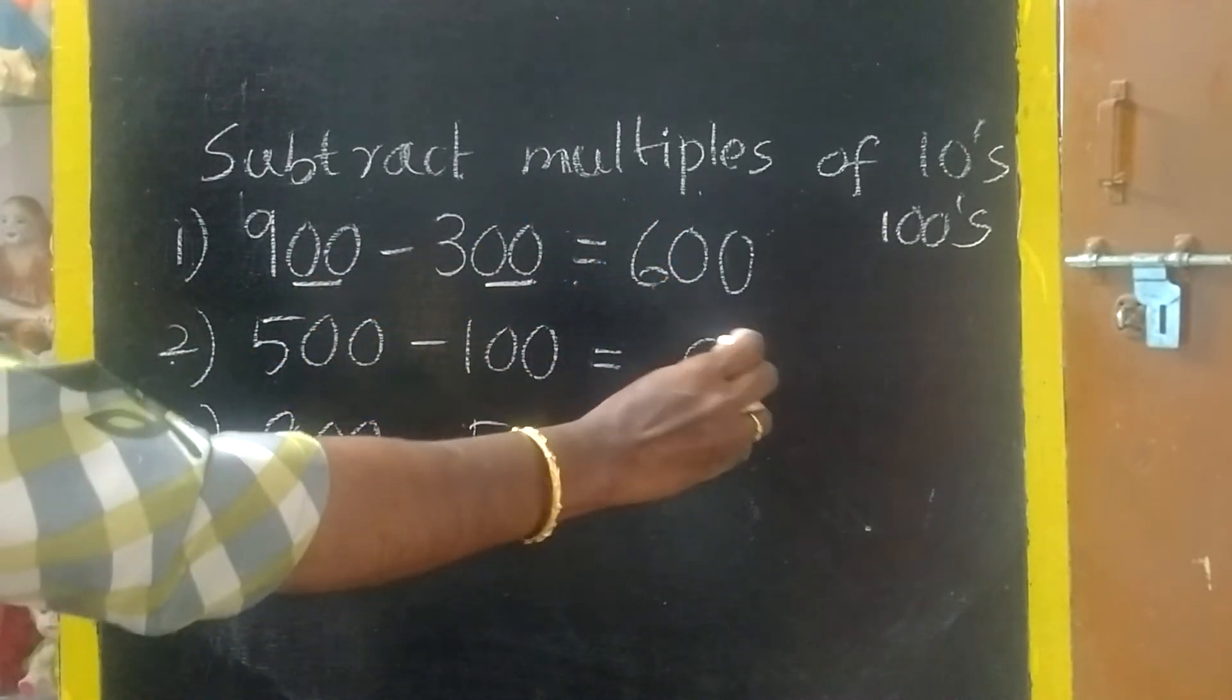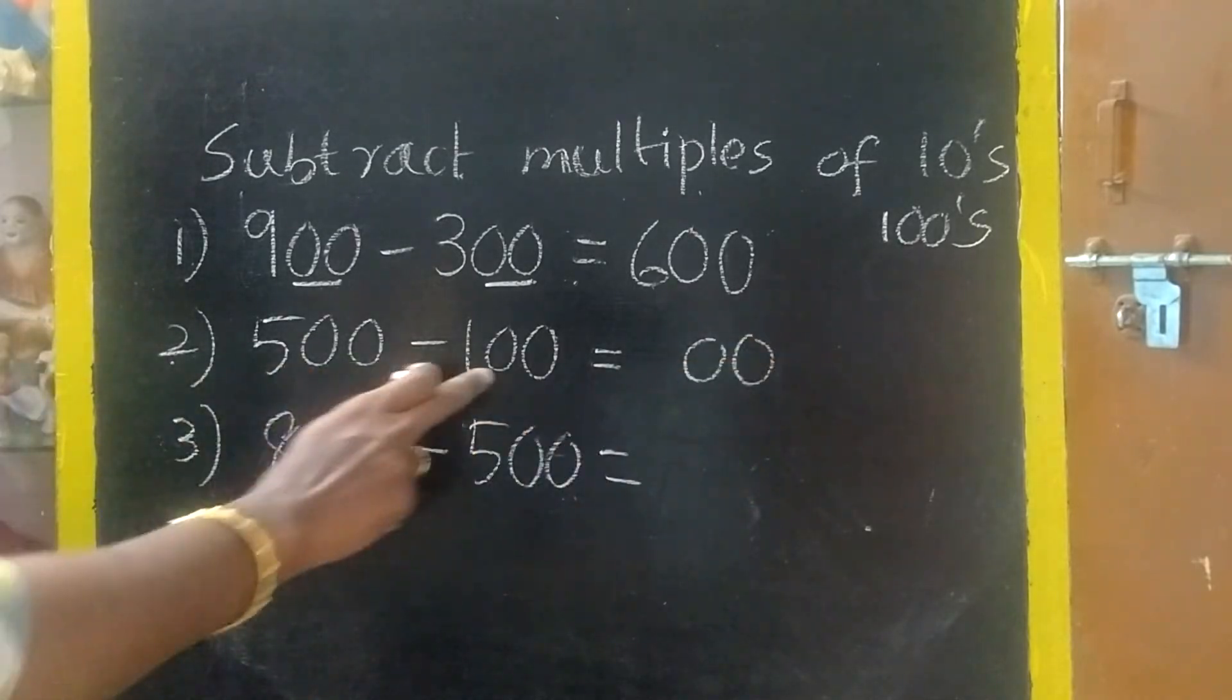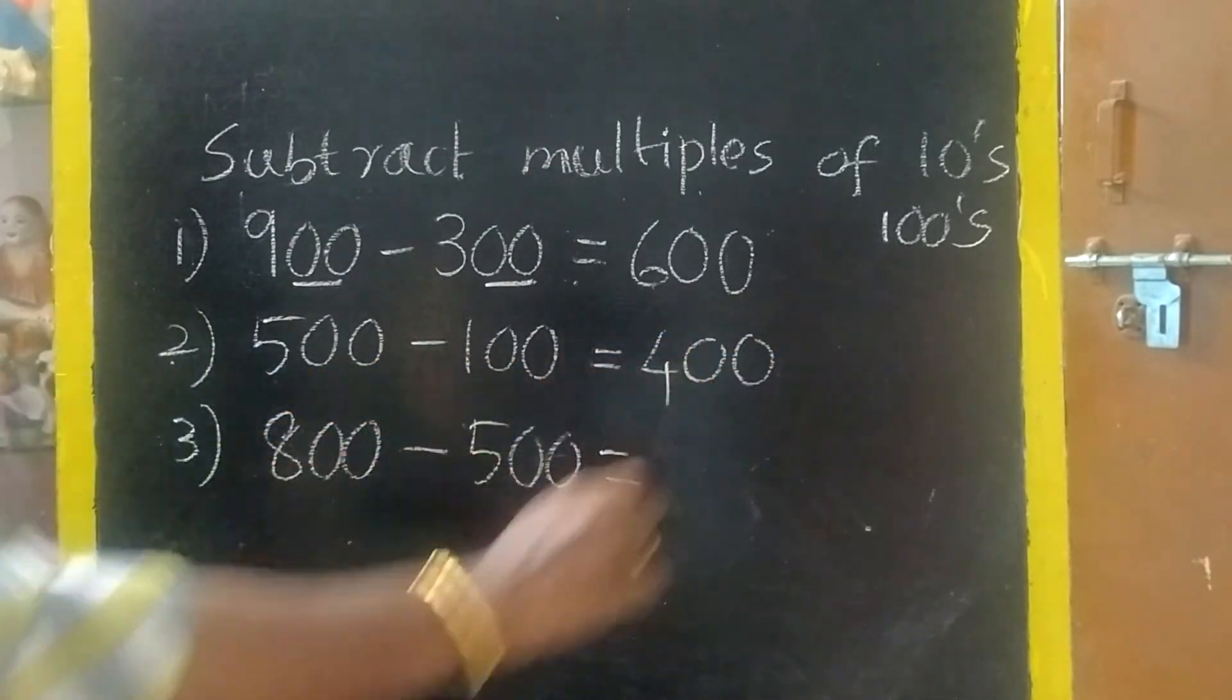Here also same. 0 minus 0, 0. Again, 0 minus 0. 5 minus 1, 4. So, the answer is 400.